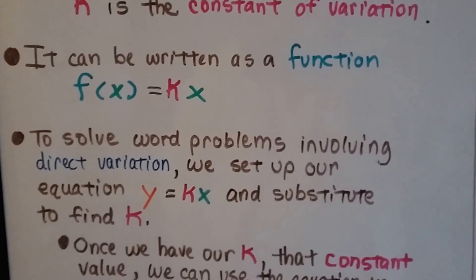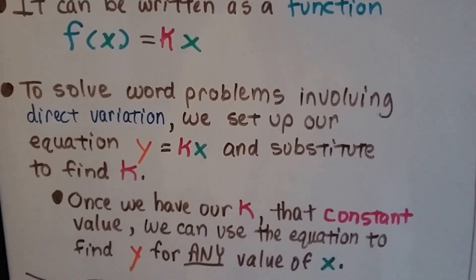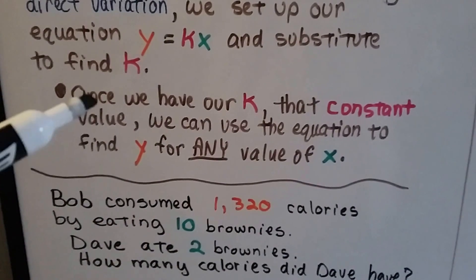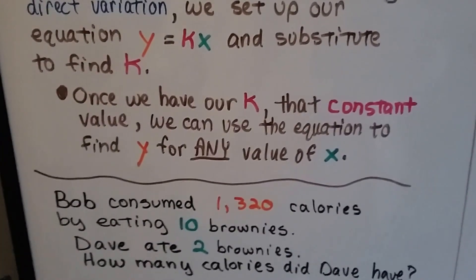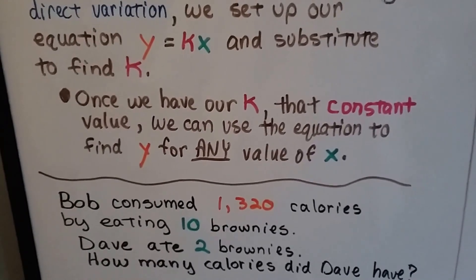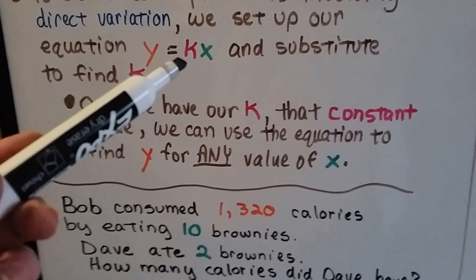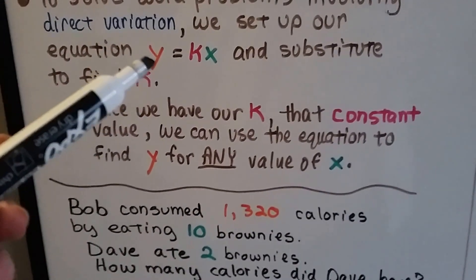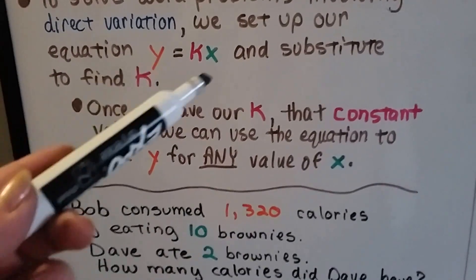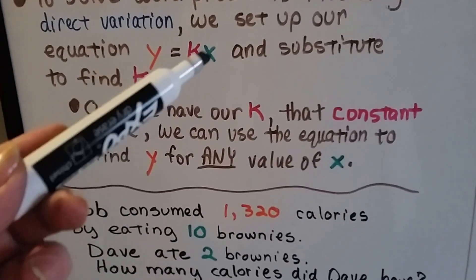To solve a word problem involving direct variation, we set up our equation y equals kx and substitute to find k. Once we've found that value for k, that constant value, we can use the equation to find y for any value of x. So if x is 1 and k is 10, then y is 10. If x is 2 and k is 10, then y is 20. See how they're proportional and directly related?